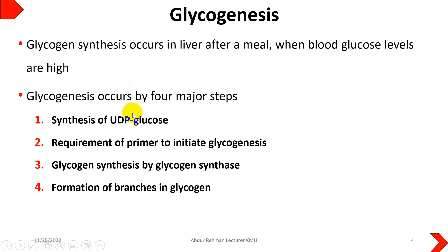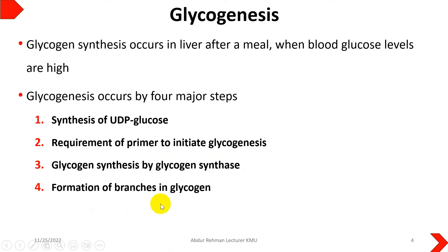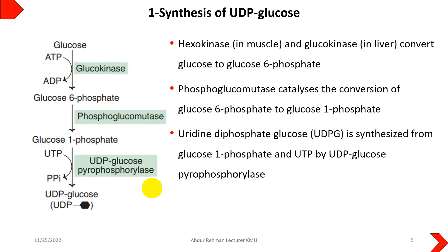The process of glycogenesis occurs in four major steps: first, synthesis of uridine diphosphate glucose (UDP-glucose); second, a primer is required to initiate glycogenesis; third, glycogen synthesis by glycogen synthase enzyme; and fourth, formation of branches in glycogen. Glycogen contains alpha 1-4 linkages in its linear chain as well as alpha 1-6 linkages at branch points, and a special enzyme is required for branch formation.